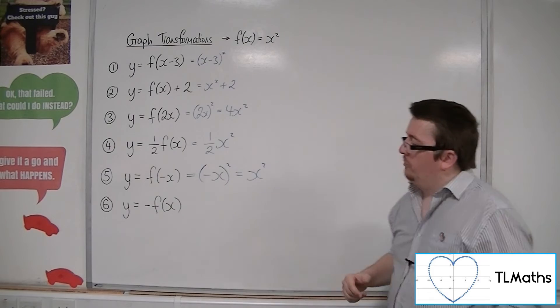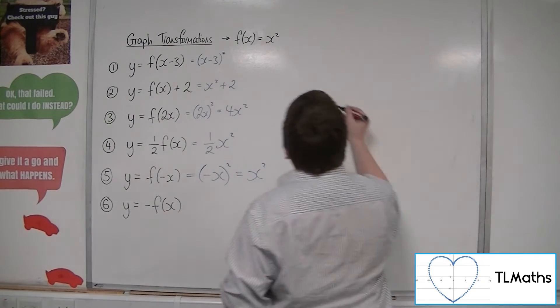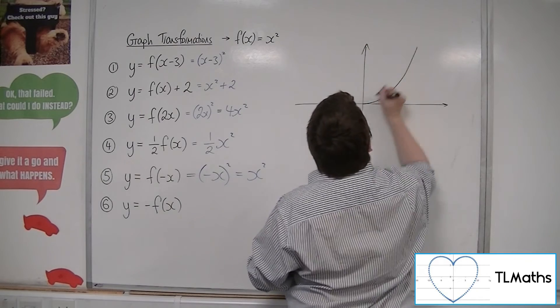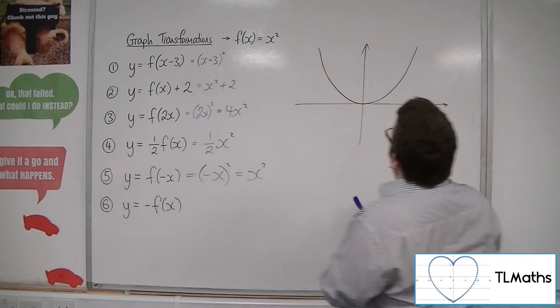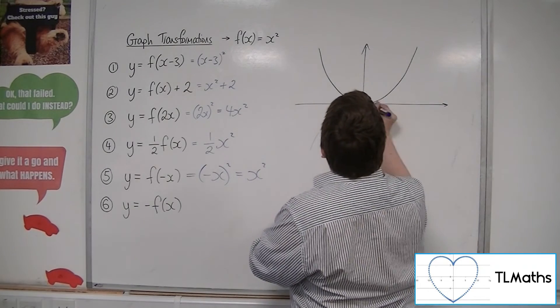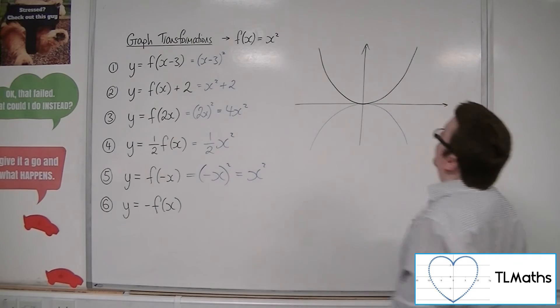Number 6, y equals minus f of x. Now that is a reflection in the x-axis. So our new curve would look something like that.